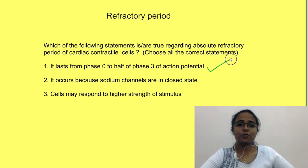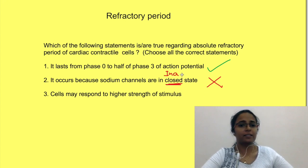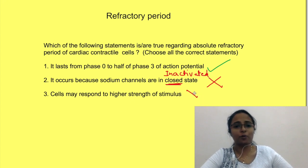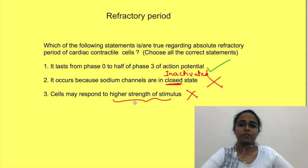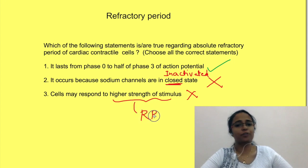See, first statement is true. That is the duration of absolute refractory period. But second statement is incorrect. Cells are refractory because the sodium channels are in inactivated state, not in closed state. Statement 3 is also wrong. Because cells respond to a higher strength of stimulus in relative refractory period, not in absolute refractory period.